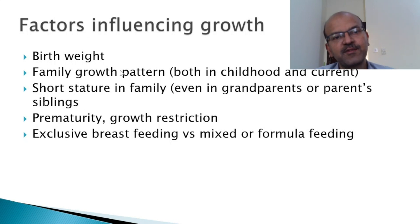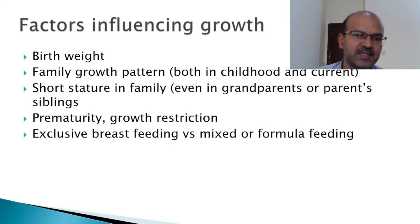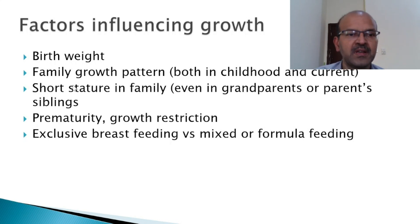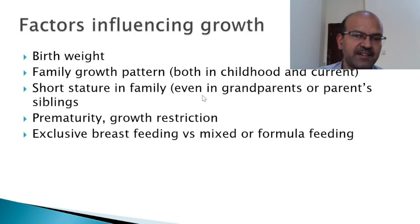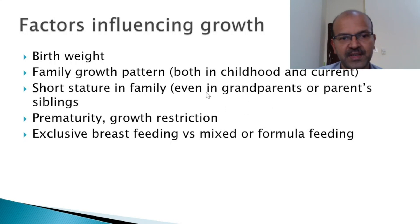Factors influencing growth include birth weight and the family growth pattern — both in childhood and the current pattern of the parents. The childhood pattern is important in terms of constitutional growth delay; for example, one parent may have had late puberty with a delayed growth spurt, and the same pattern may reflect in the baby. There may also be short stature in the family — even if parents are of normal height, skipped genes from a grandparent with short stature can occur, and the mid-parental height calculation should consider short family members.